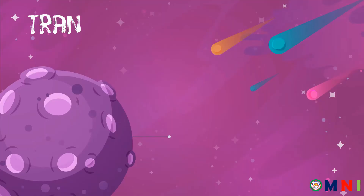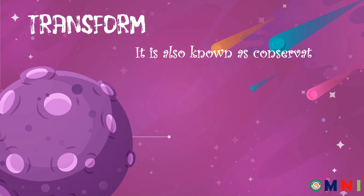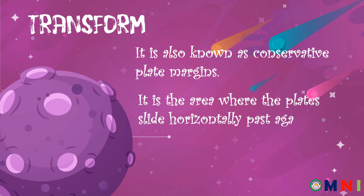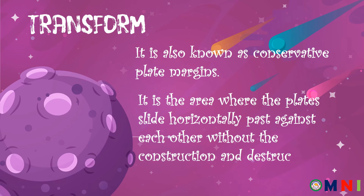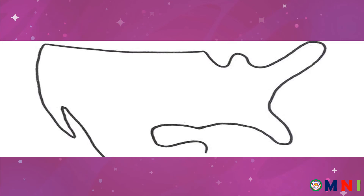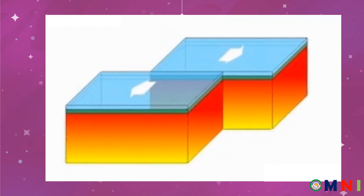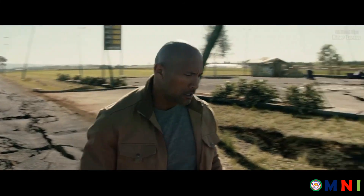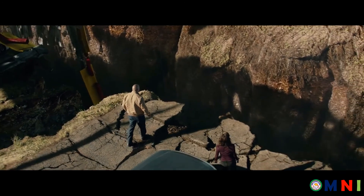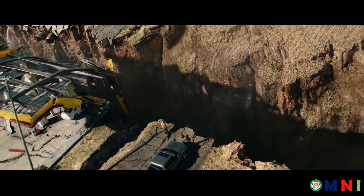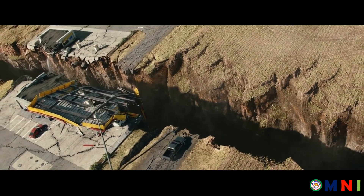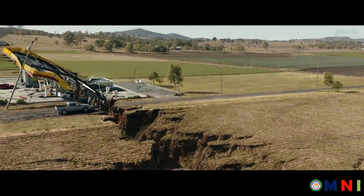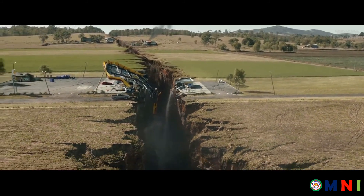Let us now proceed to the third type of plate boundary, which is the transform plate boundary. Transform plate boundary is also known as conservative plate margin. It is the area where the two plates slide horizontally past each other without the construction or destruction of the lithosphere. The transform plate boundary forms fault lines such as the San Andreas Fault. The San Andreas Fault forms the tectonic boundary between the Pacific Plate and the North American Plate, extending roughly 1,200 kilometers through California. The rubbing of the two plates as they slide against each other creates earthquakes.